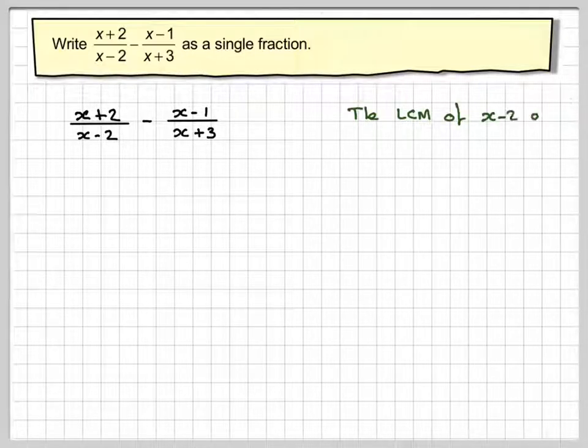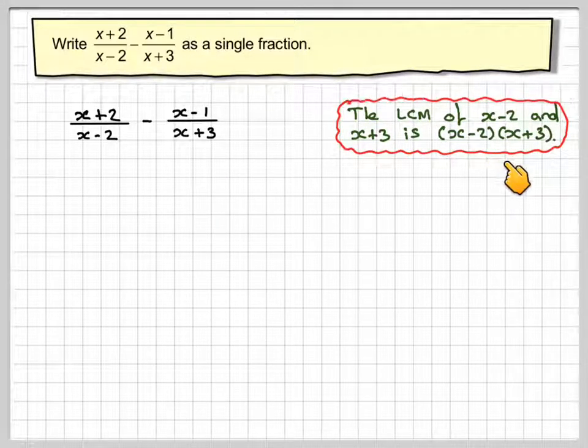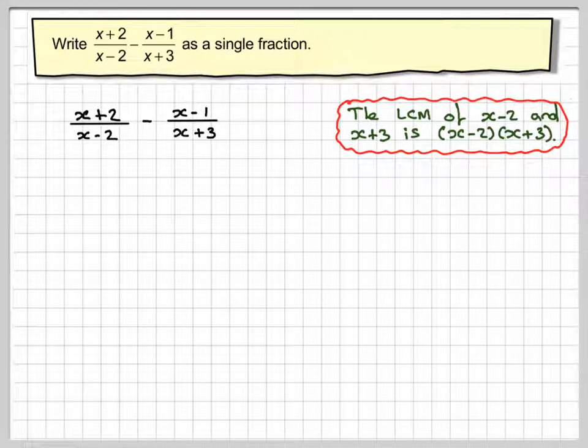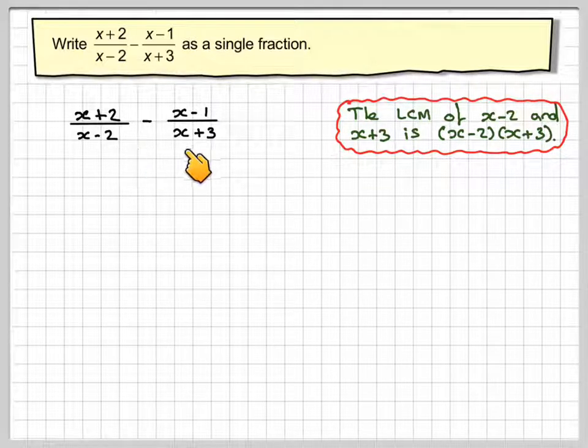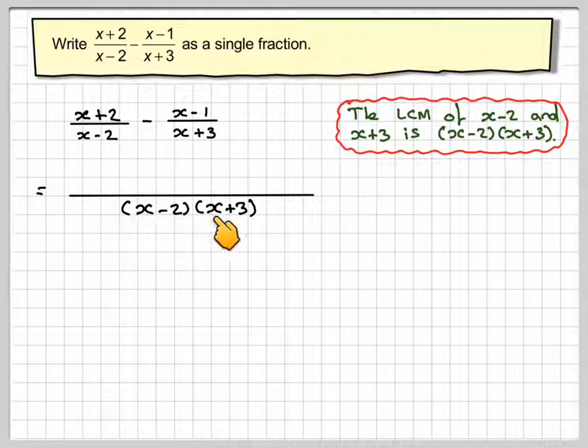So the LCM of x minus 2 and x plus 3 would be x minus 2 times x plus 3. So think how you actually add fractions together with numbers. The common denominator would be x minus 2, x minus 3. You're advised not to multiply that out at this stage.